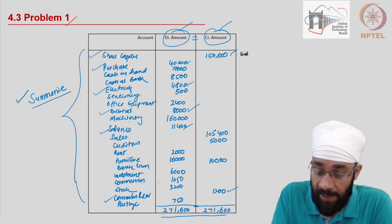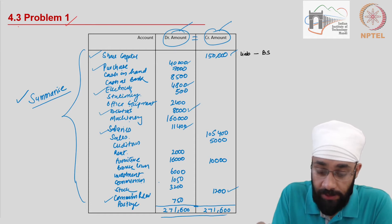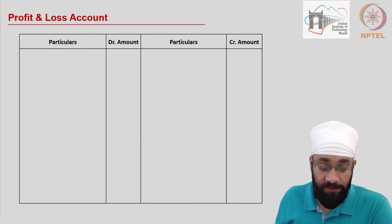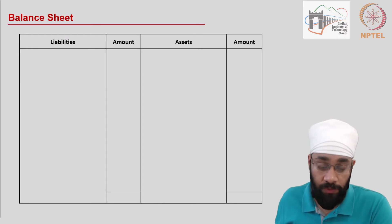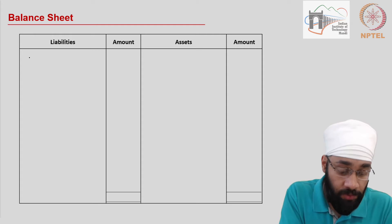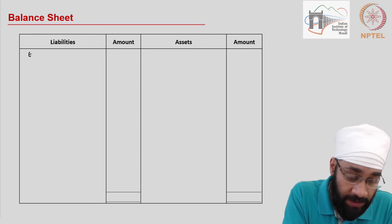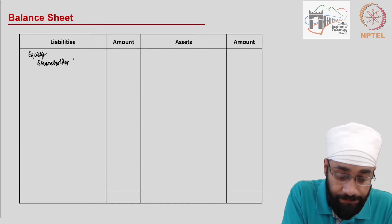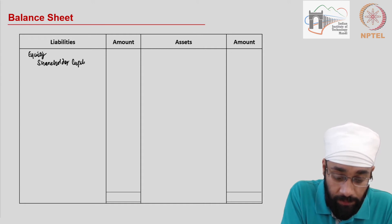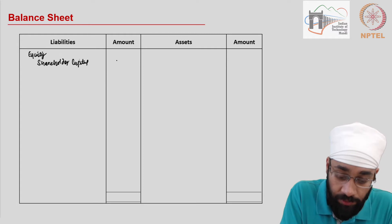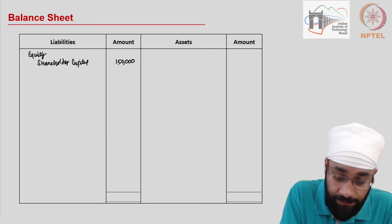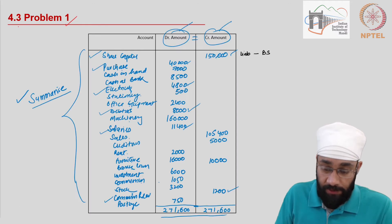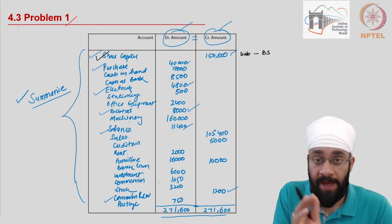Share capital is a liability and it is going to be posted in the balance sheet. I have the format of the profit and loss account and the balance sheet with me. On the liability side, under equity, you have shareholder capital — the amount is 150,000. The first item is done; share capital has been posted to its respective place in the final accounts.